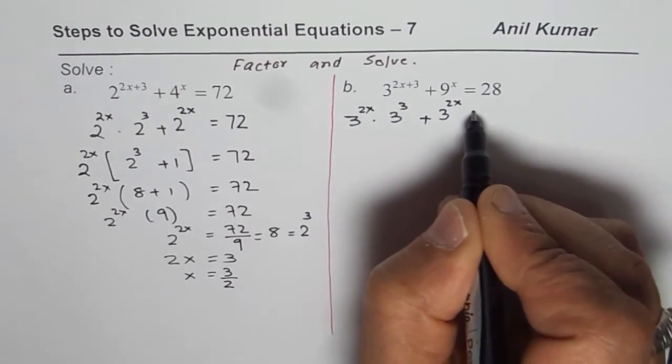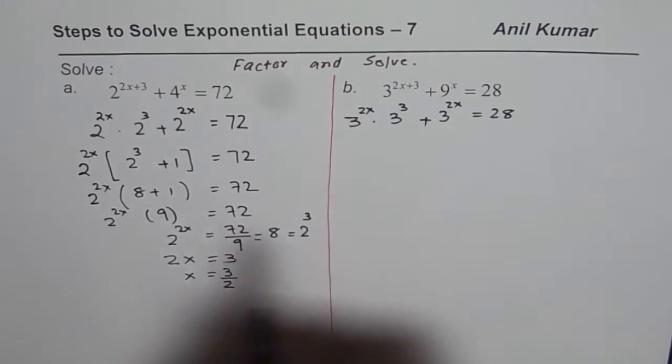And 9 is 3 squared, so it becomes 3 to the power of 2x equals 28. Perfect. This is what we did earlier.